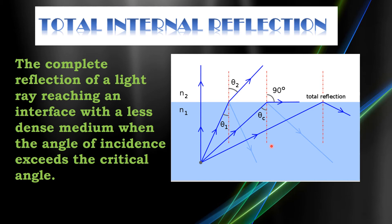There comes a certain angle called the critical angle, for which the refracted angle is 90 degrees. Then, when the angle of incidence becomes greater than the critical angle, the ray is totally reflected back into the same medium and does not pass through. This phenomenon is called total internal reflection.